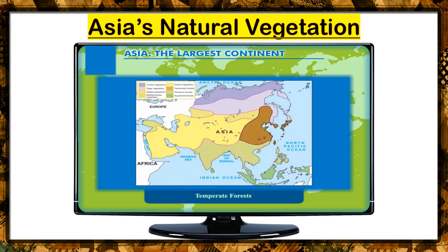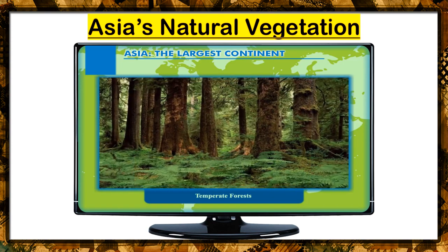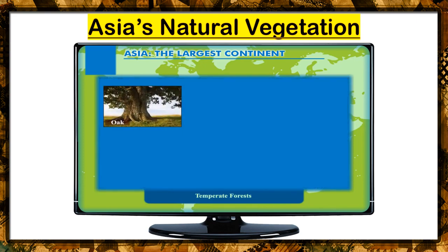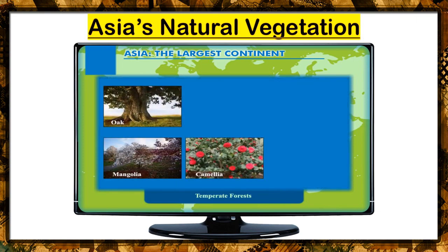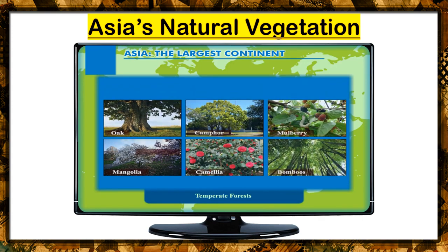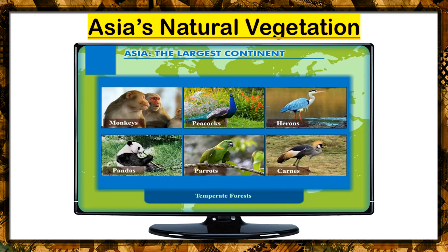Temperate forests, also called the China type of vegetation, consist of mixed forests. Both evergreen and deciduous trees like Oak, Magnolia, Camellia, Camphor, Mulberry, and Bamboos grow well in these forest lands. The wildlife that inhabits these forests includes monkeys, pandas, parrots, peacocks, herons, and cranes.